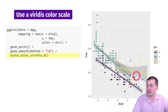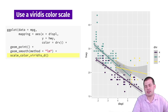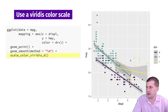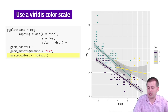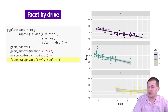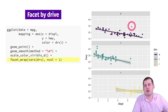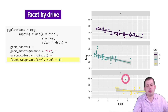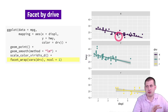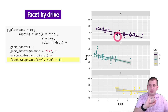Next, we change the scale — instead of default ggplot colors, we use the viridis scale by adding scale_color_viridis, and it switches. Then we add a faceting layer: faceting by drive splits it into three subplots — one for four-wheel drive, one for front-wheel drive, and one for rear-wheel drive. All we had to do was tell it to facet by drive; we didn't have to do any manual work to separate things.